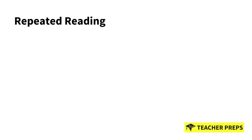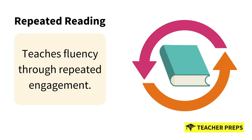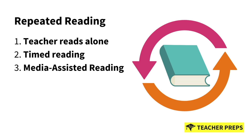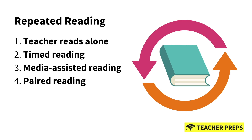The second instructional strategy is called repeated reading. This method teaches fluency through repeated engagement. First, the student reads alone, then the teacher encourages the student to re-read texts on their own. Second, we have timed reading, which helps set attainable rate criteria. The third variation is media-assisted reading, where the student uses digital resources and recordings to listen to the book while following along. The fourth variation is paired reading, which is collaborative reading with a partner.